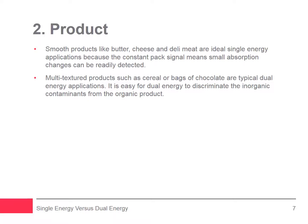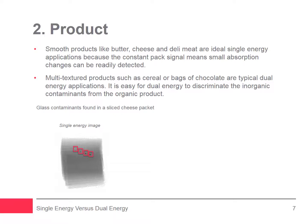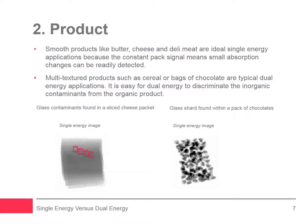Single energy technology provides safety and quality assurance at every stage of the production process for a wide range of raw, bulk, pumped, and packaged applications. However, finding contaminants in products with high variations in x-ray absorption can prove challenging for single energy detectors, as the varying absorption rates create busy x-ray images. Single energy technology is better suited to inspecting products with a more homogenous texture, like sliced cheese packets. In contrast, dual energy technology lends itself to inspecting busy x-ray images caused by products with high variations in density, due to its ability to discriminate materials by their chemical composition. Dual energy technology can detect flat glass and stone in multi-textured foods such as trail mix, cereal, mixed nuts, granola bars, mixed salad leaves, and a pack of chocolates.